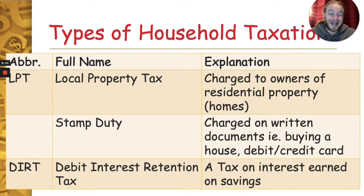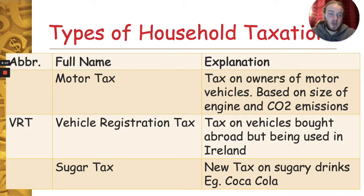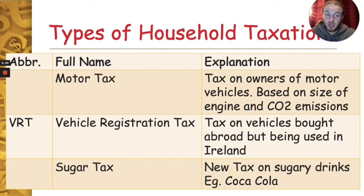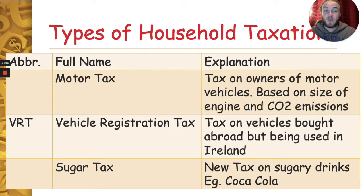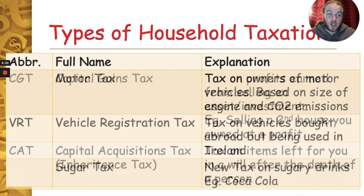DIRT, Deposit Interest Retention Tax, is a tax on the interest you earn on savings — it's usually quite high, at about 41%. Motor tax is a tax on motor vehicles based on the size of the engine and the CO2 emissions it emits. VRT, Vehicle Registration Tax, is a tax on vehicles bought abroad but being used here in Ireland. The sugar tax was introduced recently to discourage you from buying sugary drinks like Coca-Cola and other soft drinks. This caused many soft drink companies to reformulate their recipes — either containing less sugar or creating sugar-free alternatives, which is why we now have Coke Zero, Fanta Zero, and drinks like Lucozade with less sugar than before.